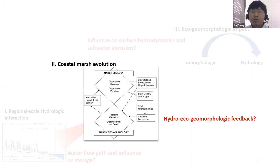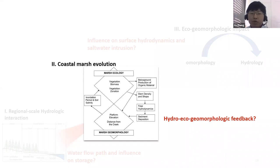To wrap up the first part: regional-scale hydrologic connectivity is critical for understanding coastal wetland flow paths and storage, and PIM Wetland is an effective tool for coastal hydrological modeling. After introducing the importance of coastal regional-scale hydrologic interaction, I will move to understanding the coastal hydrological feedback, which is a very important step to understand the ecological impact on coastal hydrology.